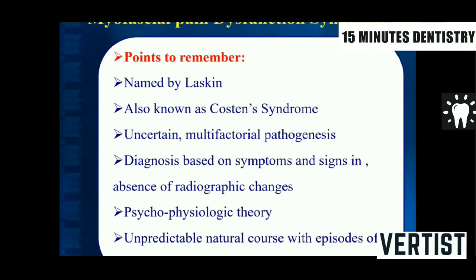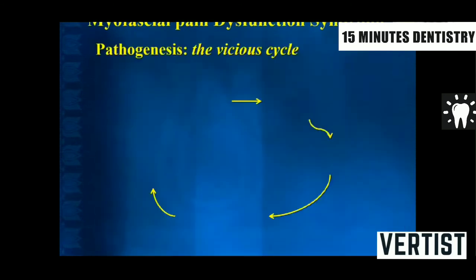MPDS was named by Laskin. It was also known as Costen syndrome. It has multifactorial pathogenesis. Diagnosis is based on symptoms and signs in the absence of radiographic changes — so there are no radiographic changes. Generally, a psychosocial theory is given for its occurrence. It has a very unpredictable natural course, and the patient might describe episodes of exacerbation and regression.